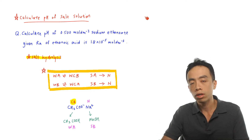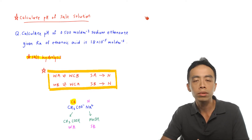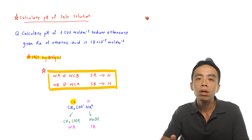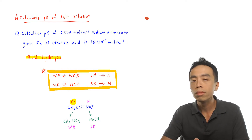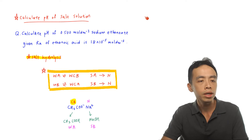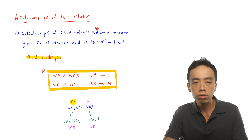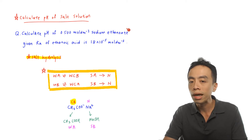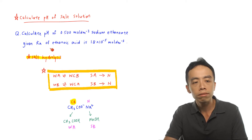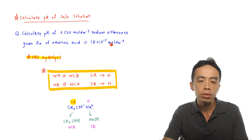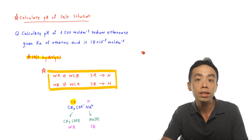Let's run through a very simple example, talking about the salt sodium ethanoate. We want to calculate the pH of 0.500 mol per dm³ of sodium ethanoate, given the Ka of ethanoic acid is 1.8 times 10 to the power of minus 5 mol per dm³.